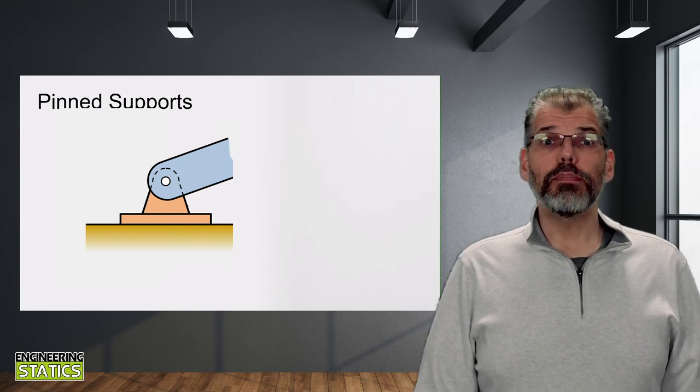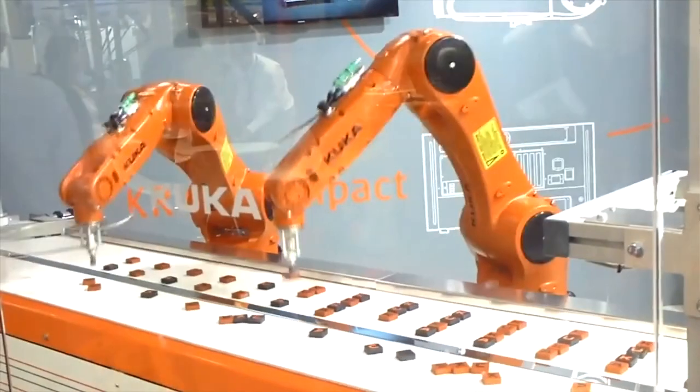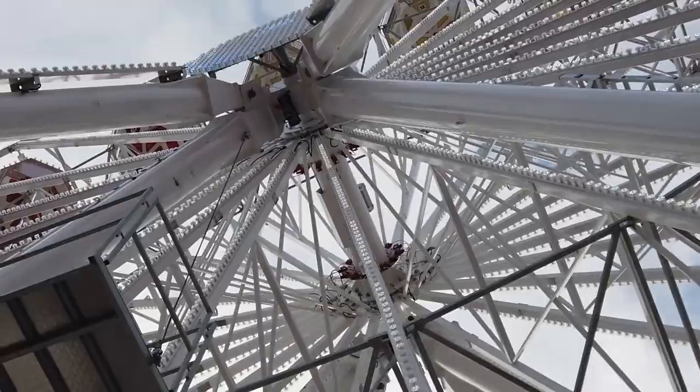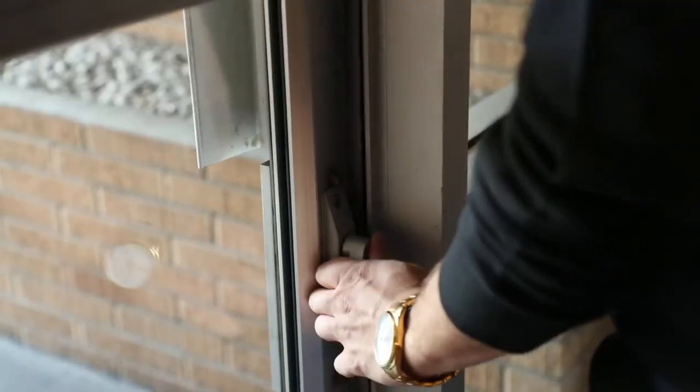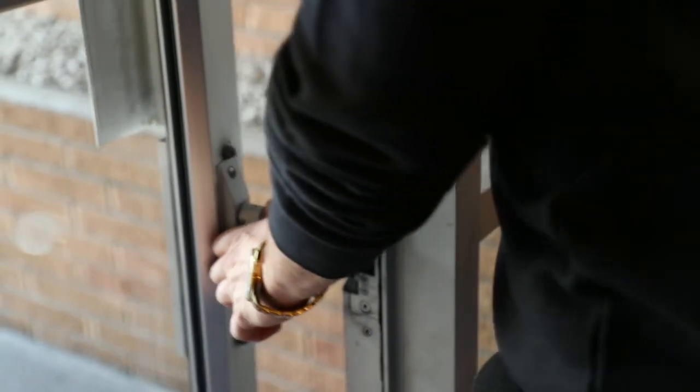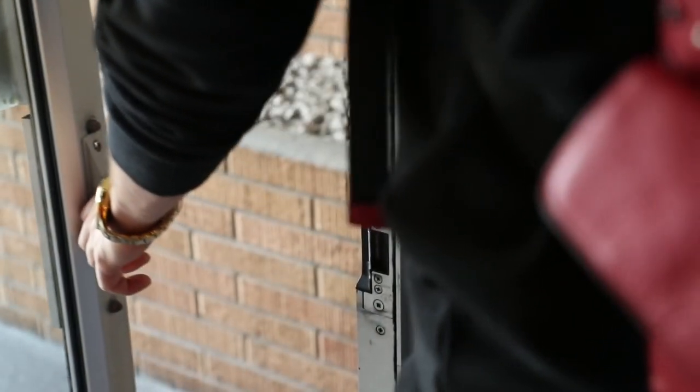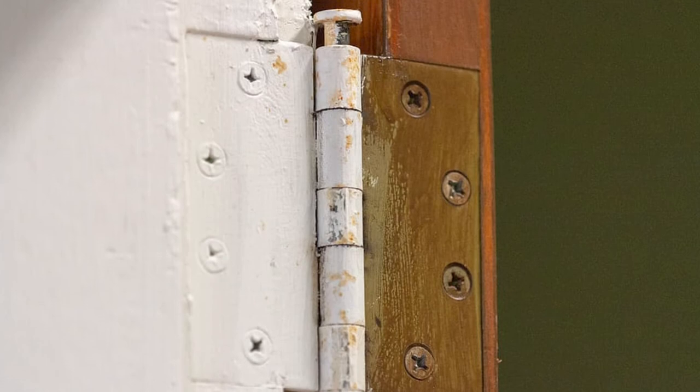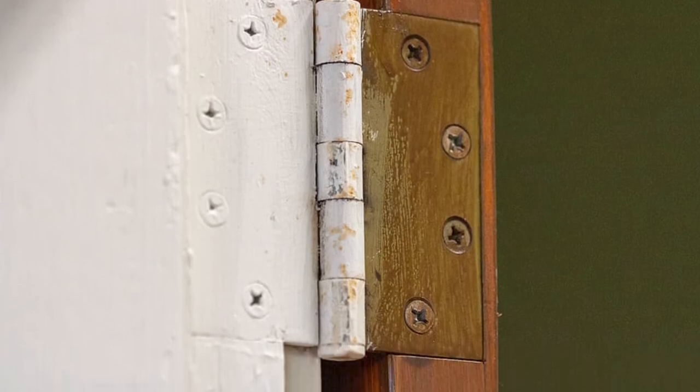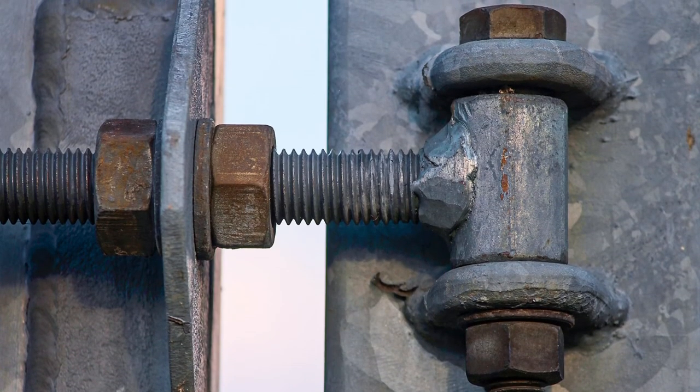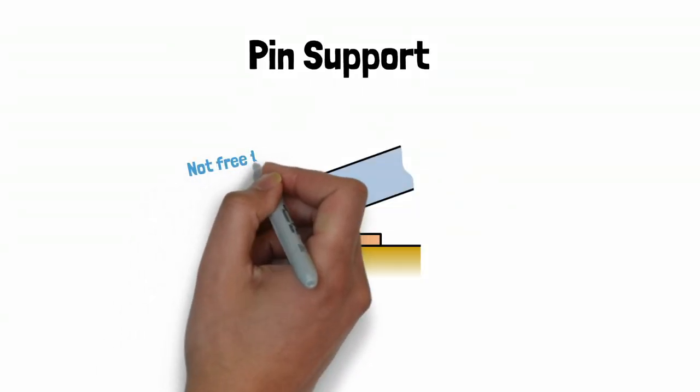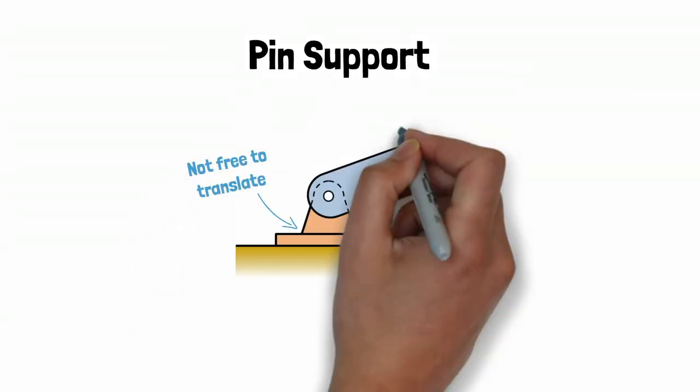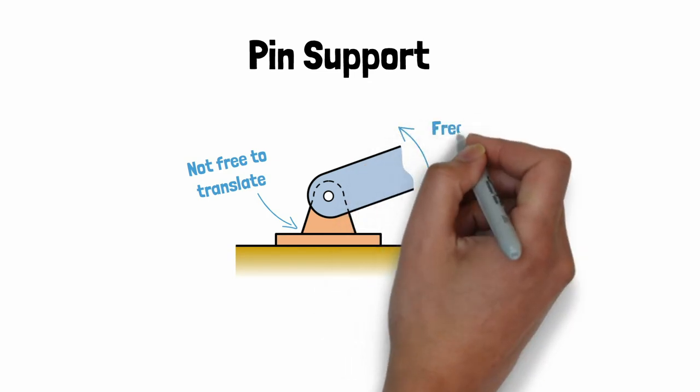The next category is pin supports. You have likely seen such supports in many modern buildings constructed with tubular structural elements. You have almost certainly interacted with one of these on a daily basis as well, whenever you open a door. Although you might refer to it by an alternative name in such a case: a hinge. Looking at our pin support, we see that it is similar to our previous category of support, except that it is not free to translate.